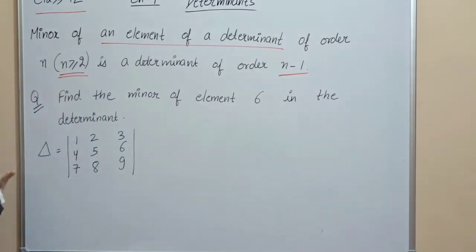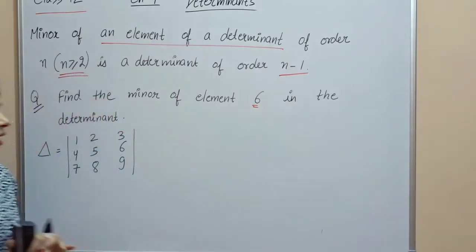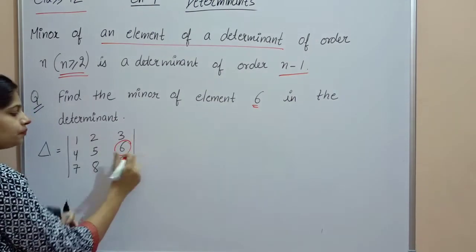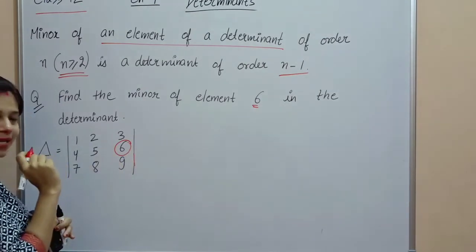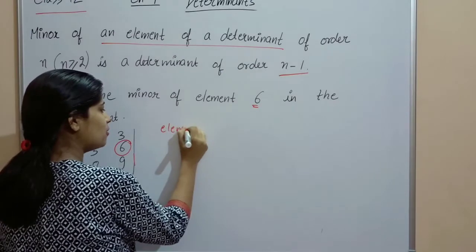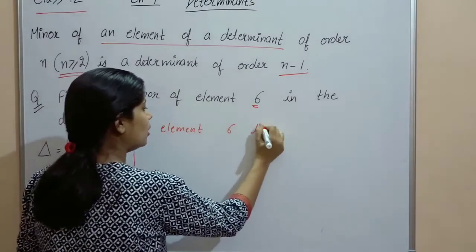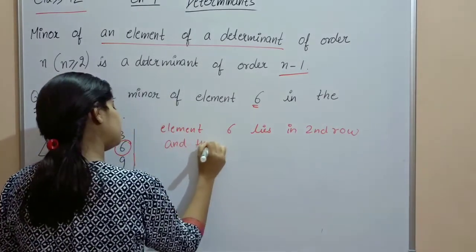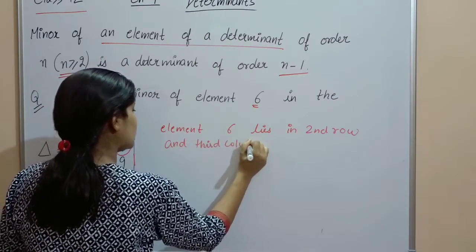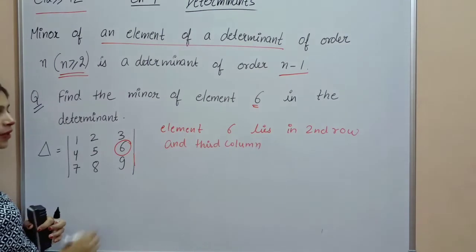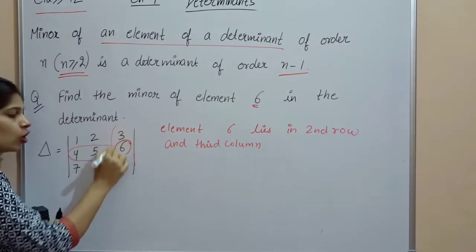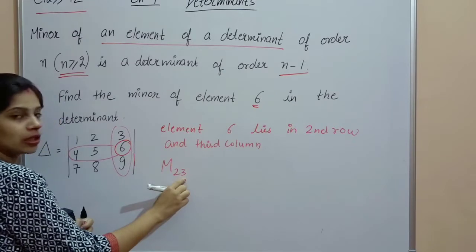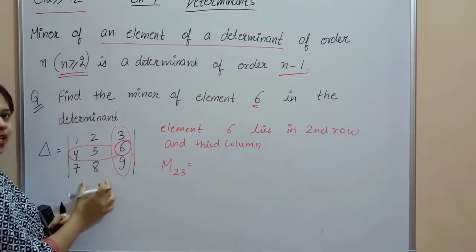Let's see an example. We have to find the minor of element 6. First, find the position of element 6 — which row and which column is it in? Element 6 lies in the second row and third column. So I need to delete the second row and the third column.